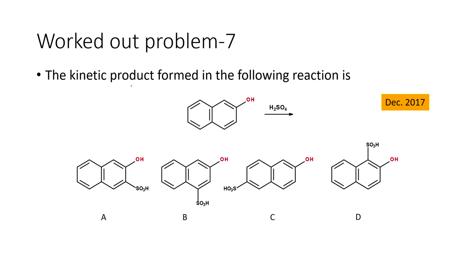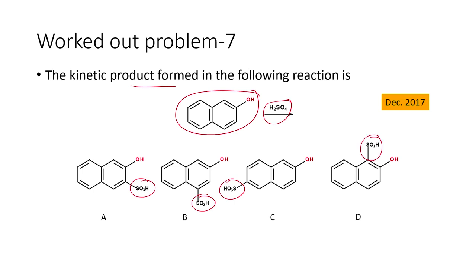Problem seven: the kinetic product formed when 2-naphthol (β-naphthol) is treated with sulfuric acid. This is a sulfonation reaction. The sulfonic acid group can be introduced at positions 1, 3, 4, or 6. We need to find the kinetic product. A key insight: the naphthol unit contains an enol, and keto-enol tautomerism will be decisive here.